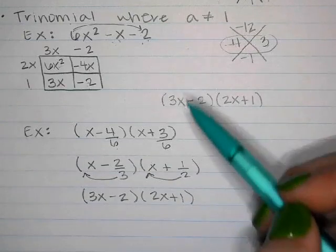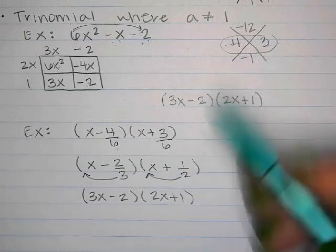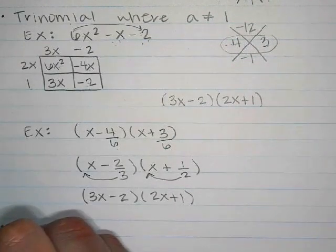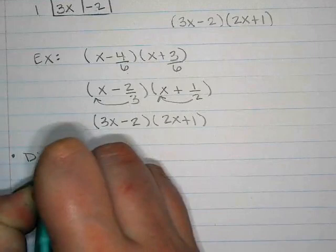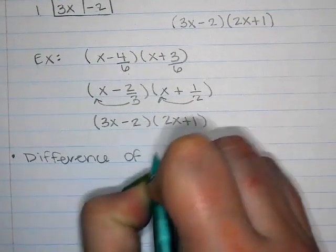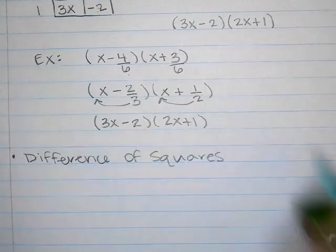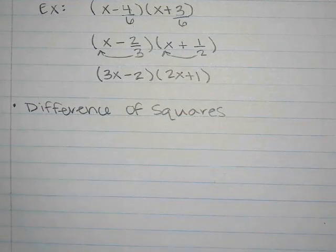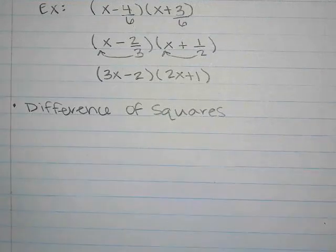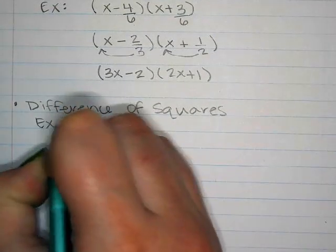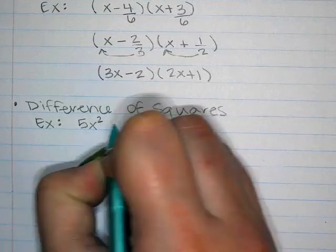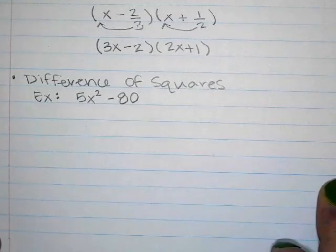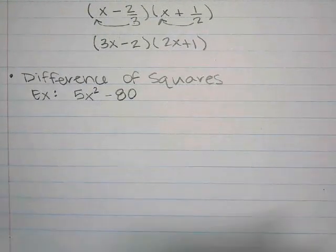One last type of factoring: difference of squares. Here's our example: 5x squared minus 80. Before we go further, what do you notice about the numbers 5 and 80?